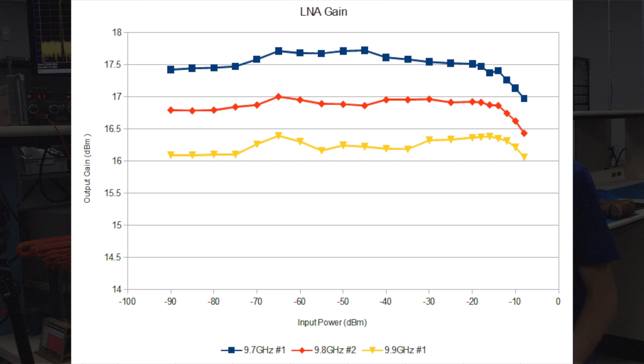In this plot, you can see the completed data where we have set the frequency to 9.7, 9.8, and 9.9 gigahertz and varied the input power. You can see the point at which the amplifier rolls off around an input of minus 10 dBm.